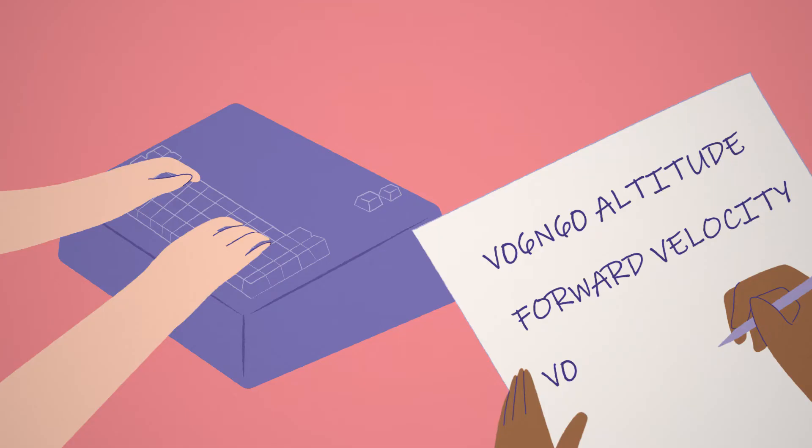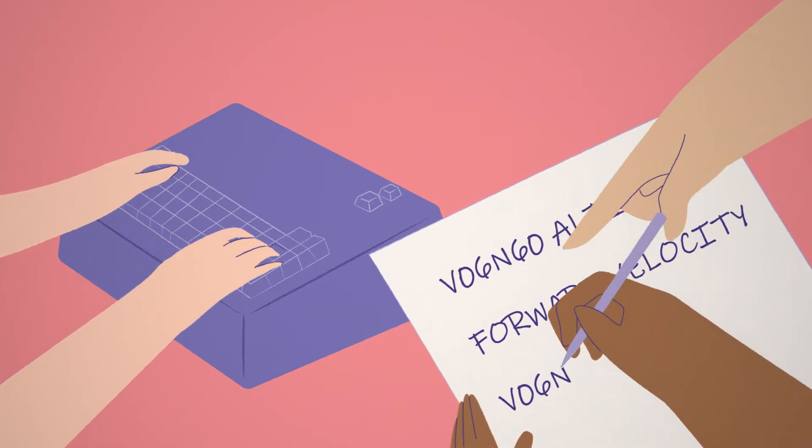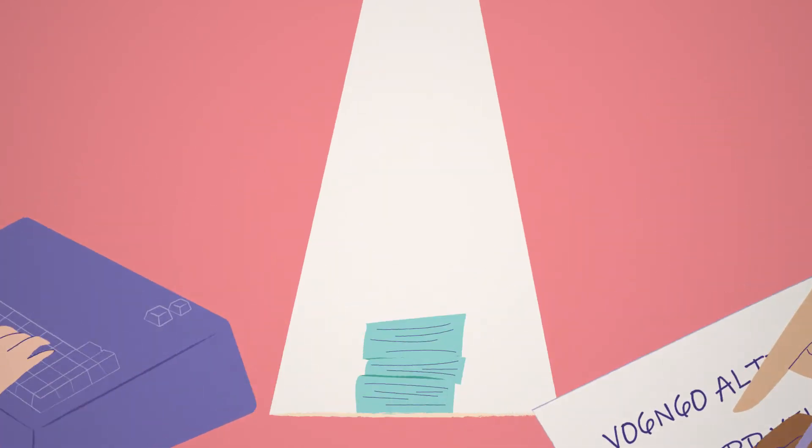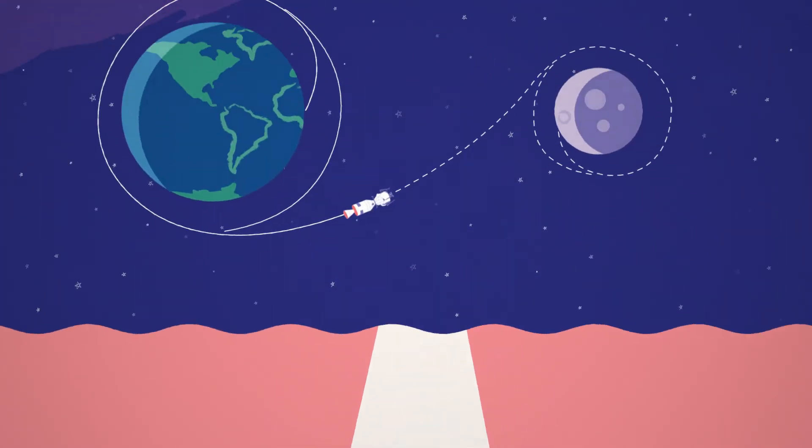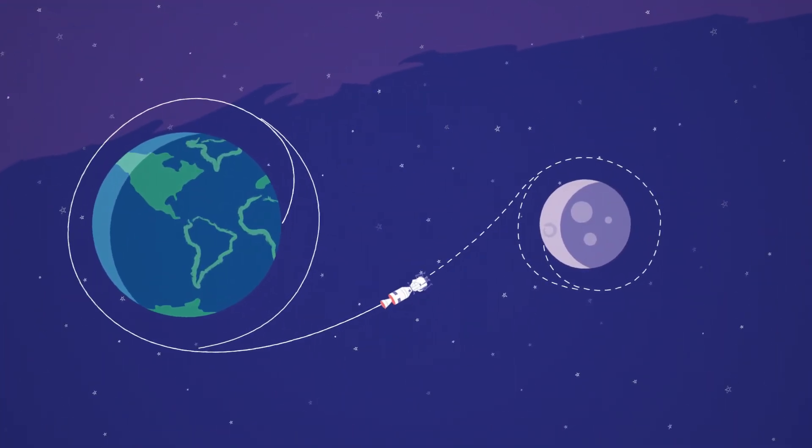Margaret and her team wrote so much code that a printout of it was as tall as Margaret. Everything had to work just right to get the astronauts to the moon safely.